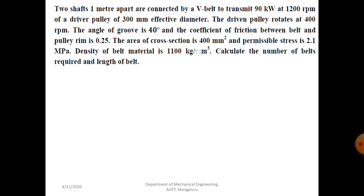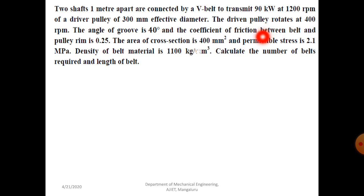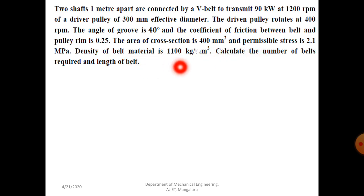We'll solve one problem that is similar to a flat belt drive type. Problem statement: Two shafts one meter apart are connected by a V-belt to transmit 90 kilowatt at 1200 rpm of the driver pulley of 300 mm effective diameter. The driven pulley rotates at 400 rpm. The angle of groove is 40 degrees. Coefficient of friction between belt and pulley rim is 0.25. The area of cross-section is 400 mm square, permissible stress is 2.1 MPa, and density of belt material is 1100 kg per meter cube. Calculate the number of belts required and length of belt.